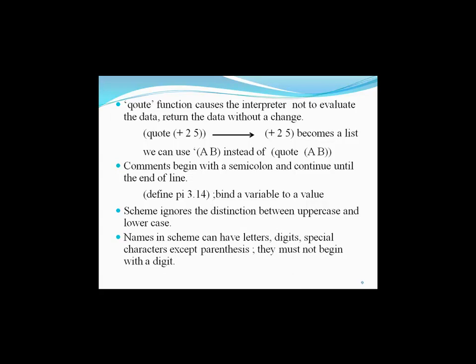In Scheme, names can use letters, digits, and special characters except parentheses. Names must not begin with a digit. Now, we will convert some mathematical functions to Scheme. For example, (2 + 5) × (7 - 3) — to write it in Scheme, first we add 2 plus 5, then we subtract 3 from 7, and then we multiply the two outputs. That is what we have done here.